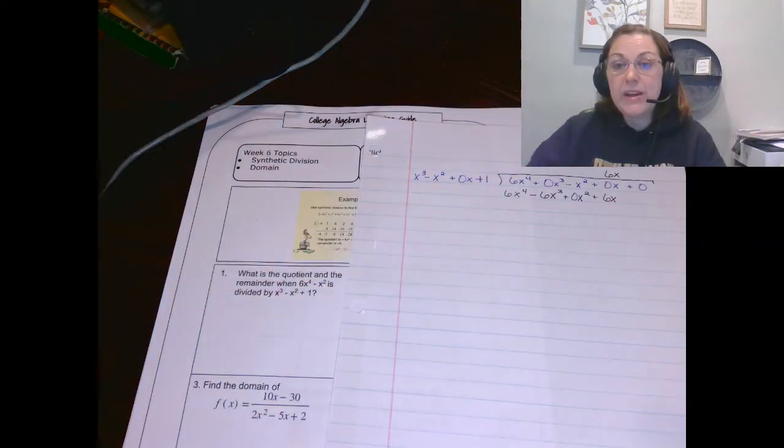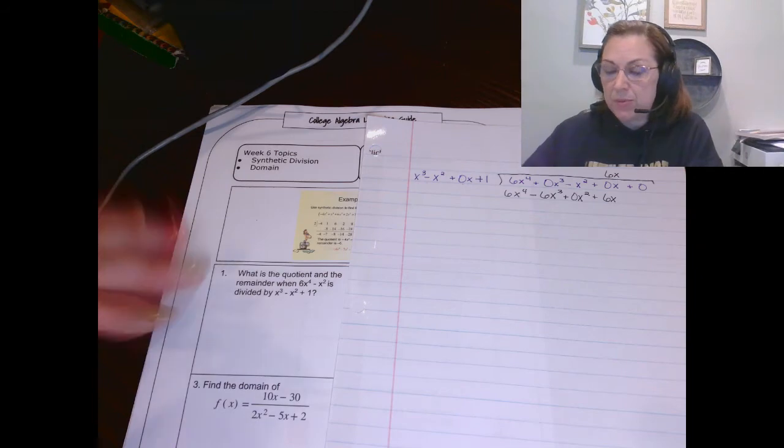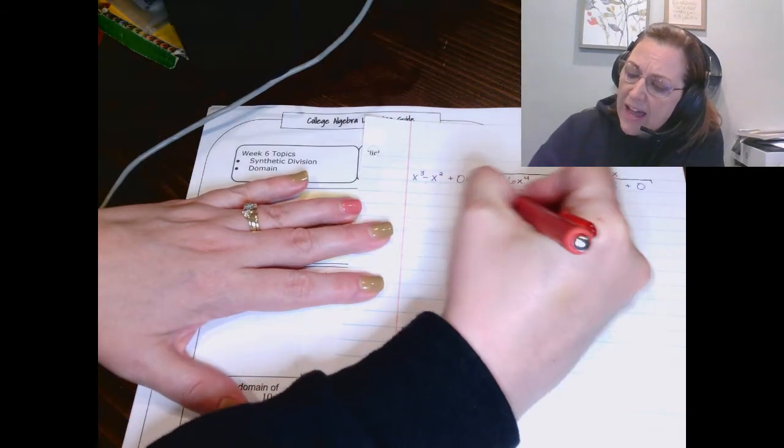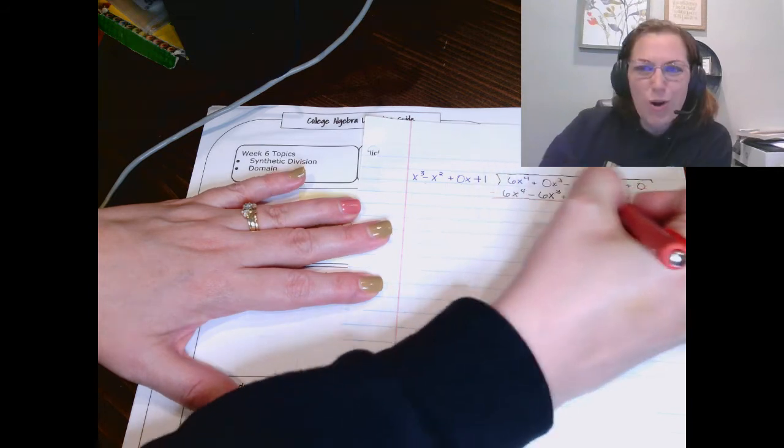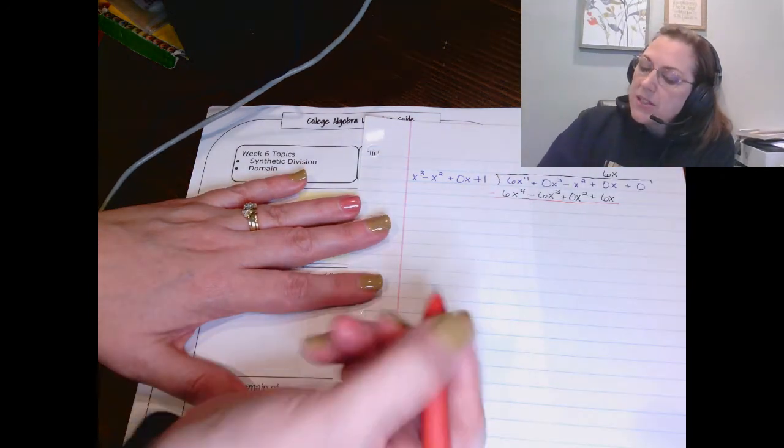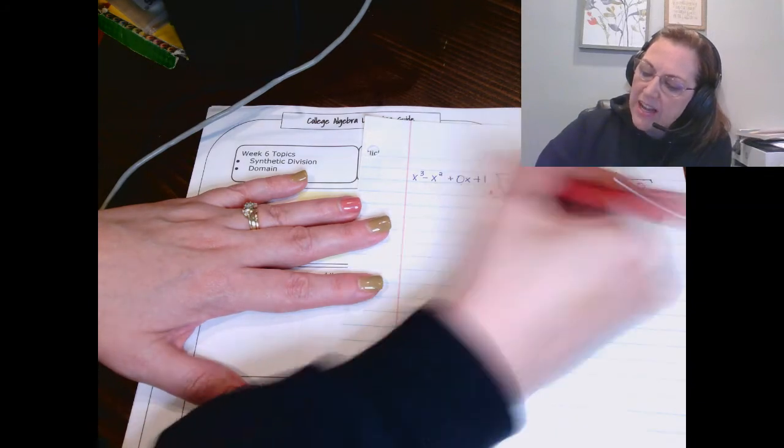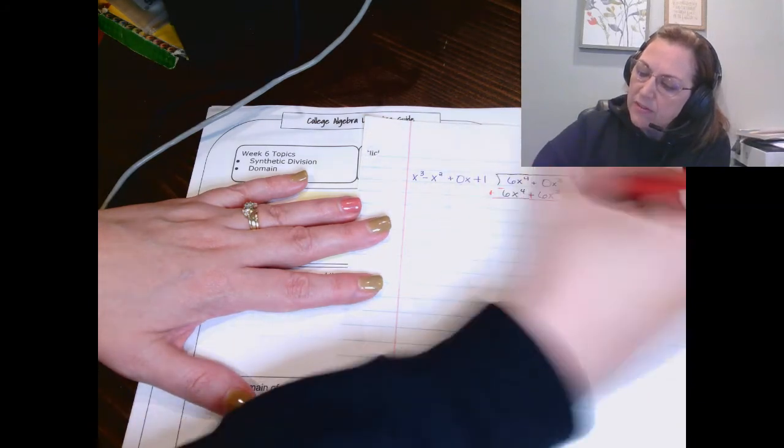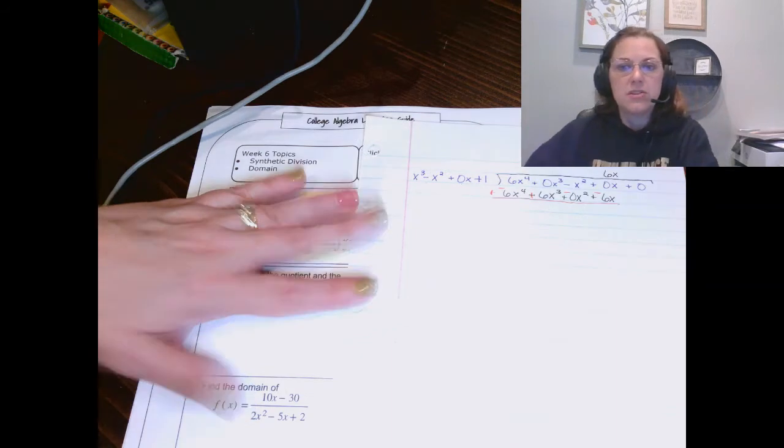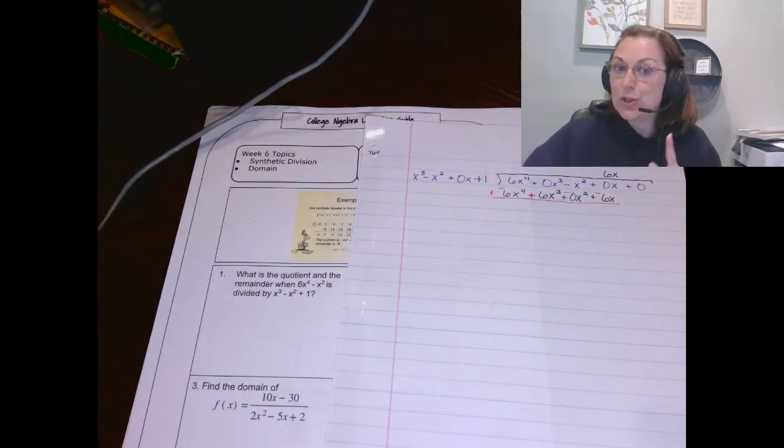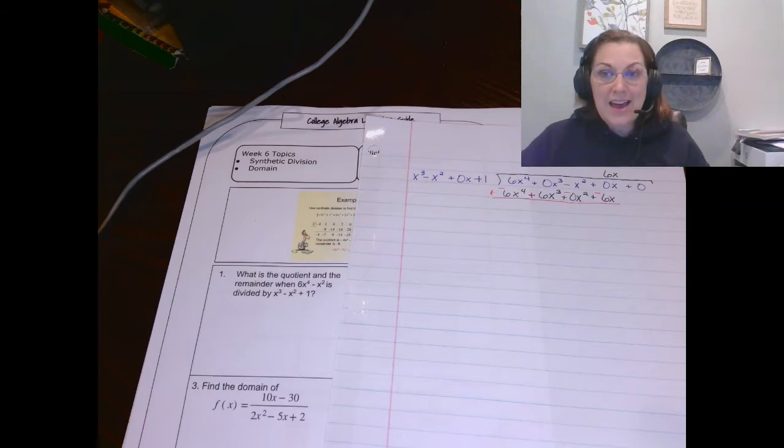And now we subtract just like we normally would with division. The problem with this is that in algebra, it's a little harder to subtract. So it's a little bit easier if we add and change all of the signs here. So notice what I did. I would normally subtract, but it's a little easier to add and change all the signs.